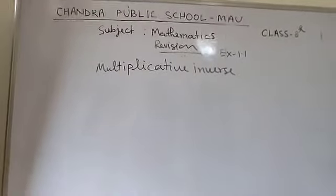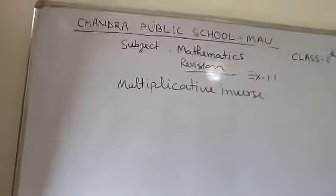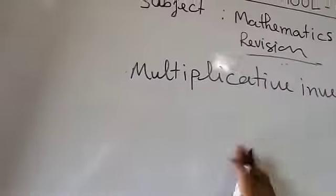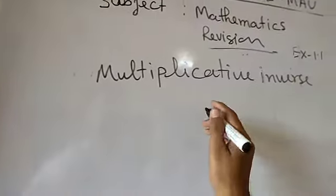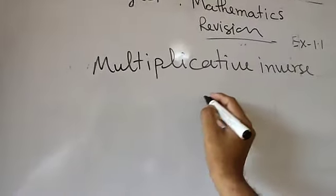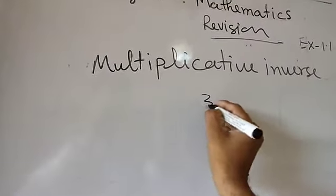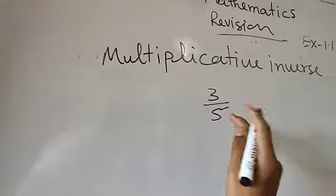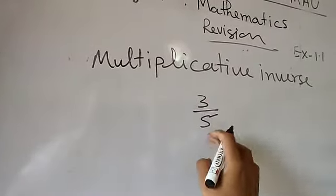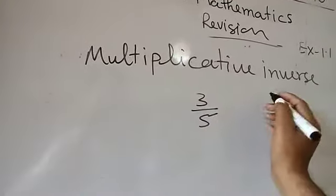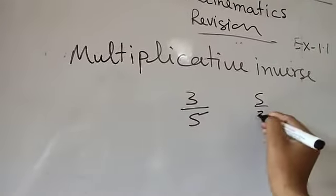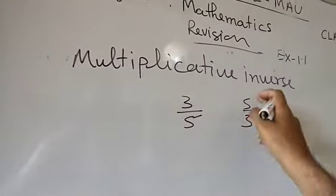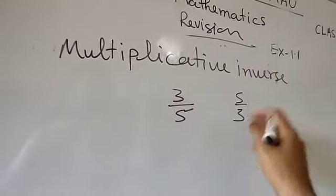Now, multiplicative inverse. The multiplicative inverse of any number will be the reciprocal — that is also called the reciprocal. If I am going to ask what is the multiplicative inverse of 3 by 5, what will be the reciprocal of 3 by 5? That will be 5 by 3. So the multiplicative inverse of 3 by 5 is 5 by 3.